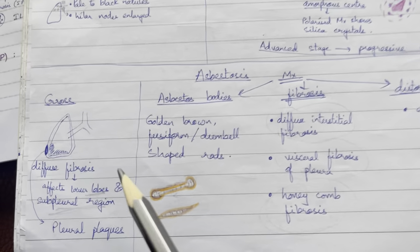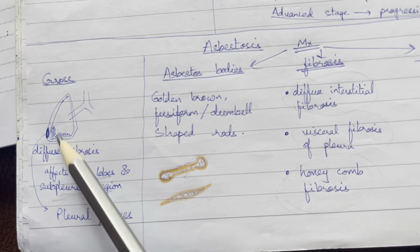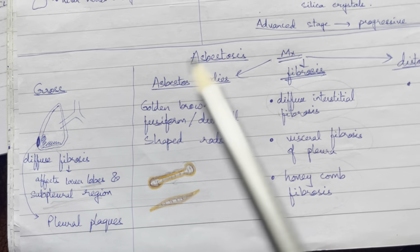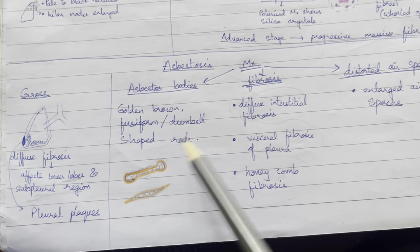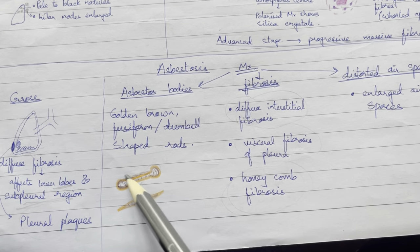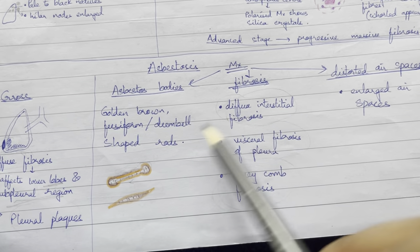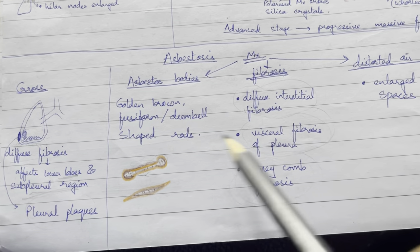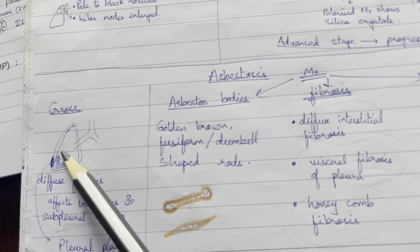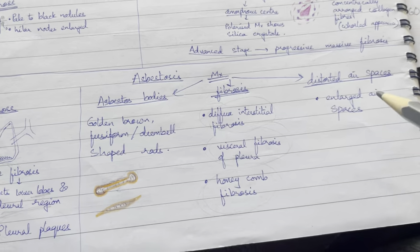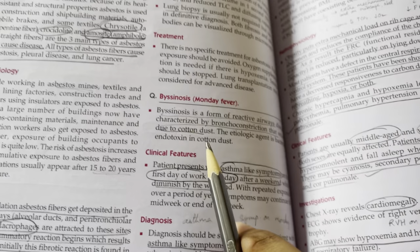Asbestos bodies are visible under microscopy — golden brown, fusiform or dumbbell shaped. Asbestosis predominantly affects the lower lobes and sub-pleural region. Pleural plaques also occur. Pathological findings include diffuse interstitial fibrosis, visceral pleural fibrosis, honeycomb fibrosis, and distorted enlarged air spaces.